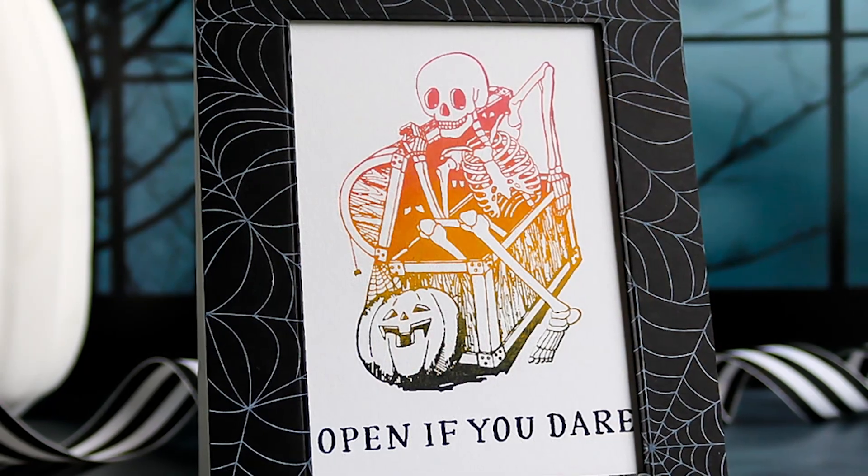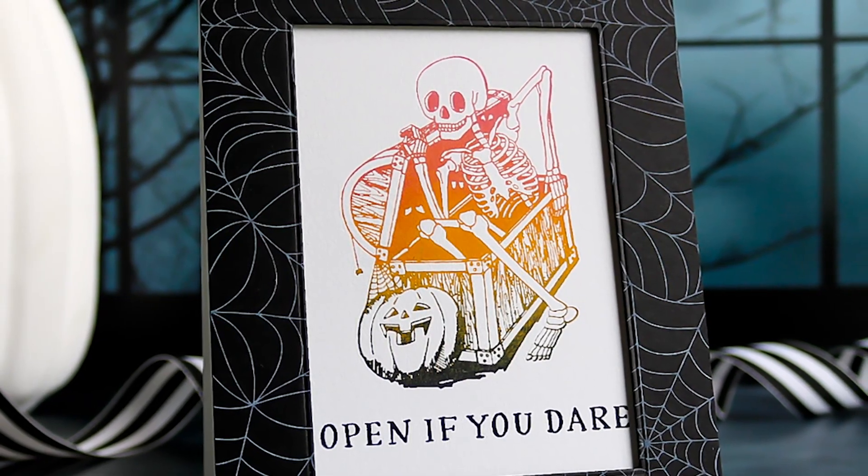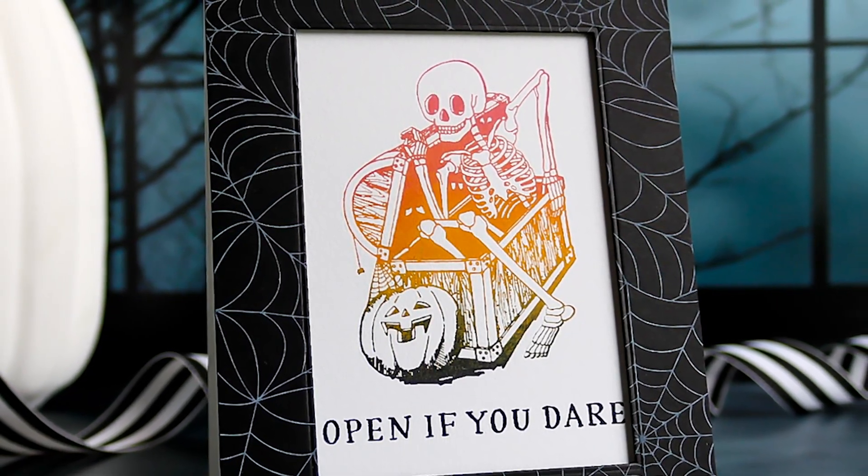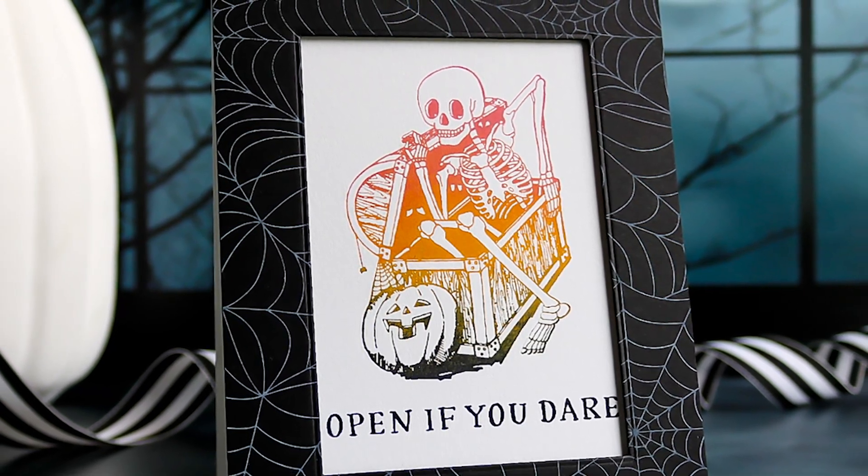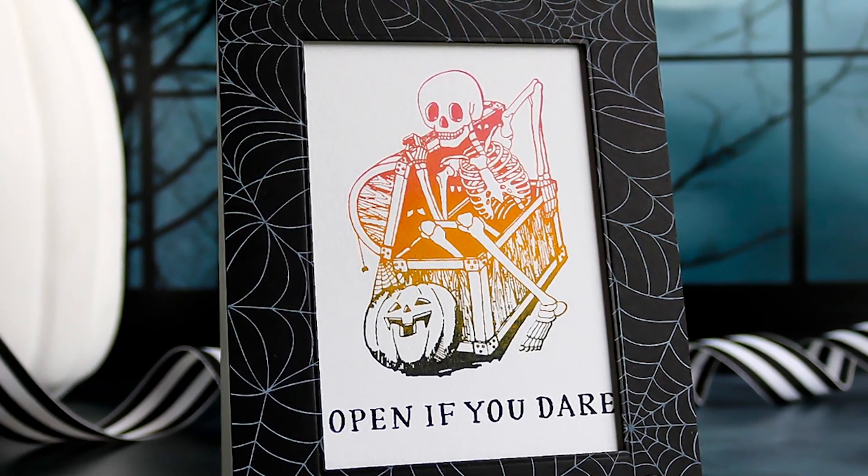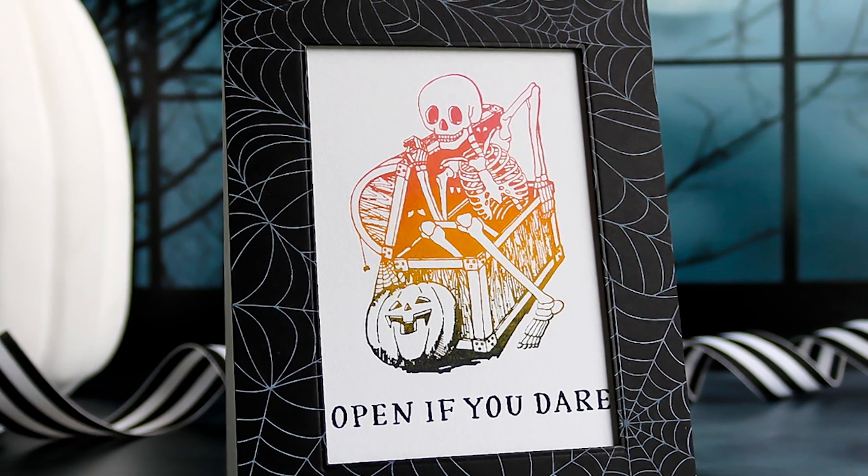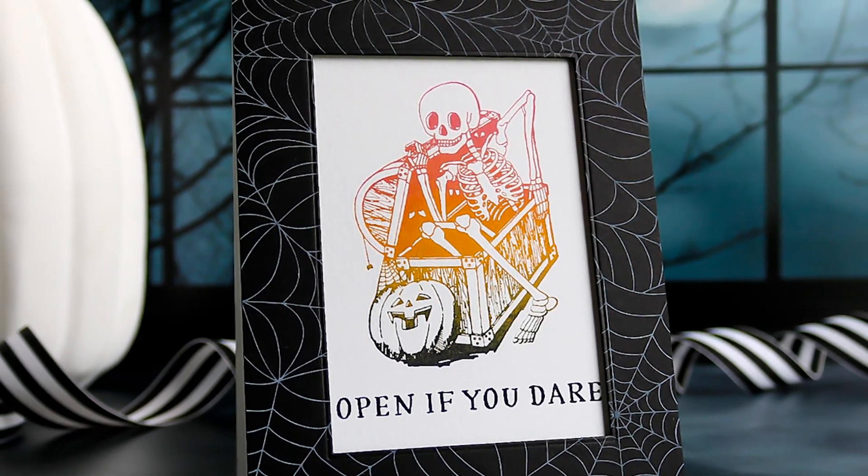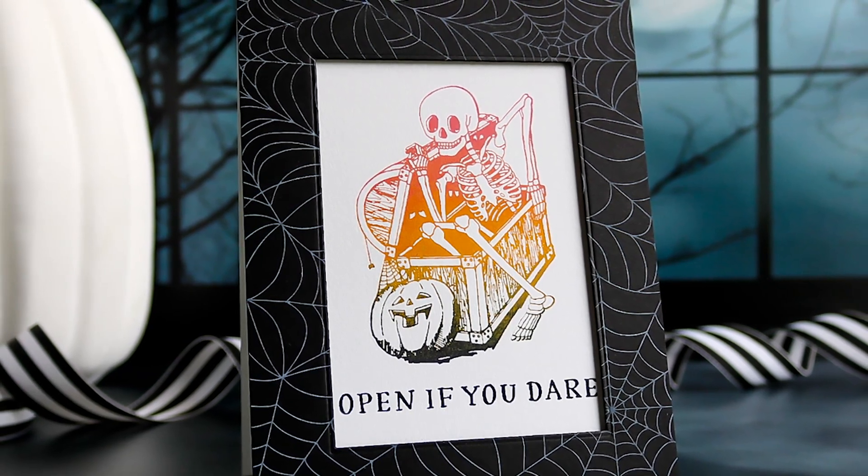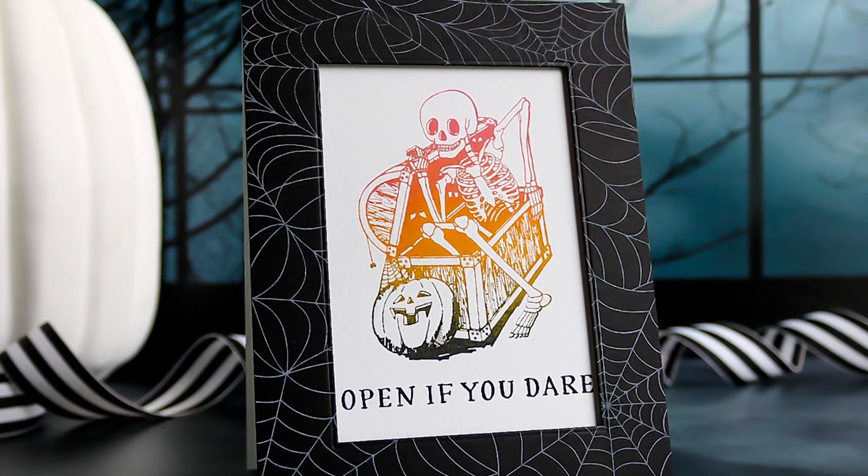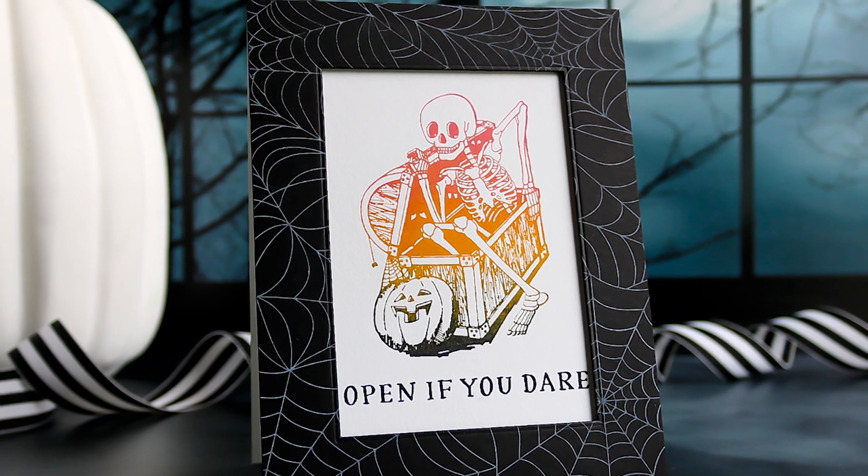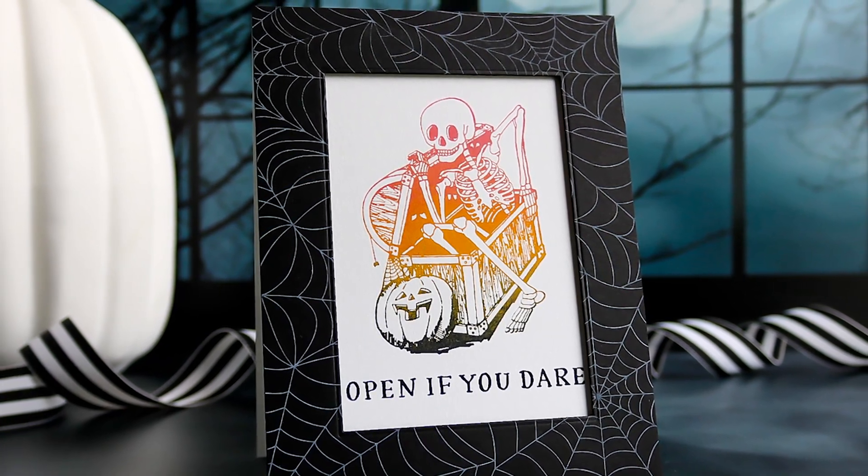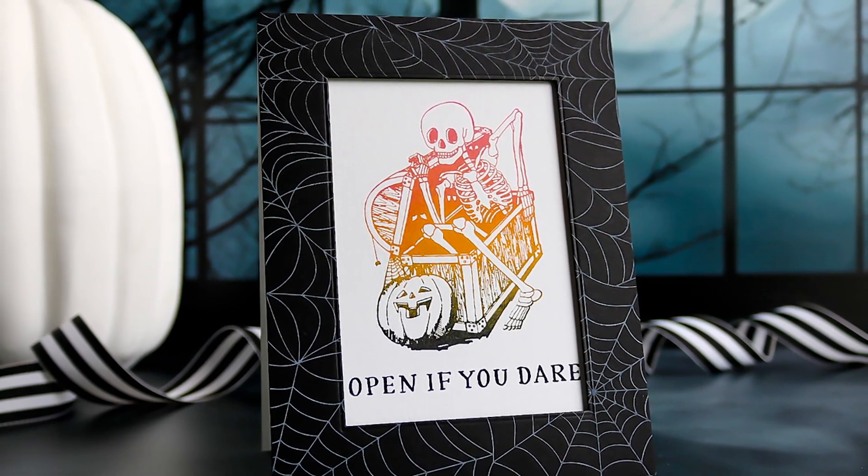So here he is and I use the spider webs and I use white pigment ink to stamp the spider webs onto black cardstock. It works like a dream and then I cut a frame using some spellbinders dies. I'm going to have all this stuff linked down below for you and of course I did that ink blending again with the black ink, the saffron, and then the wild berry ink and I just love what it did to this guy.